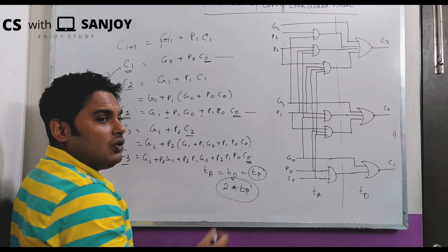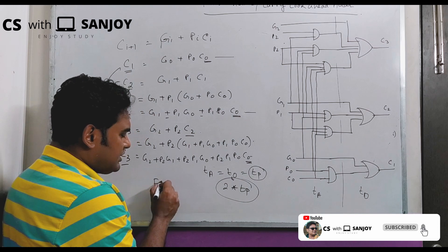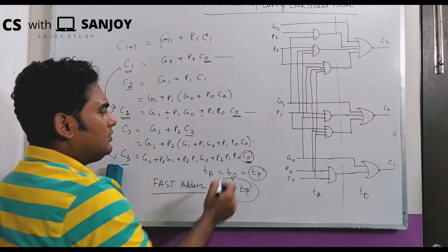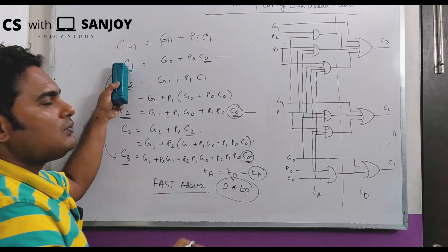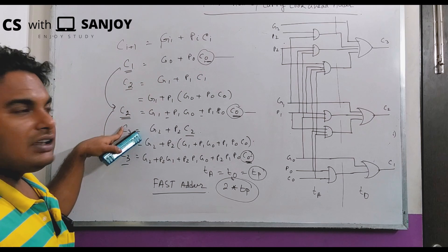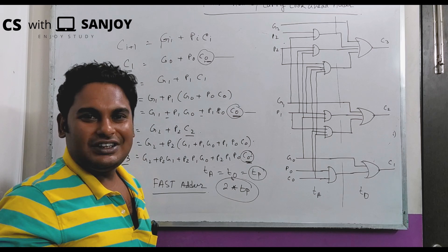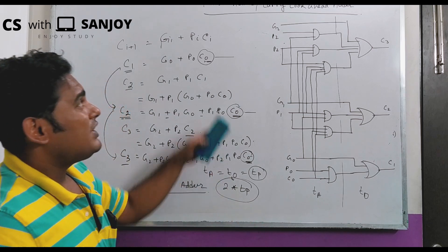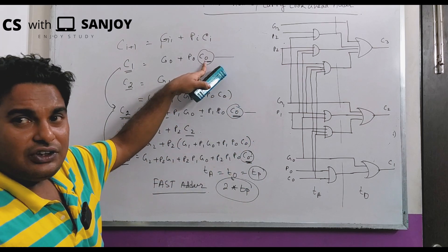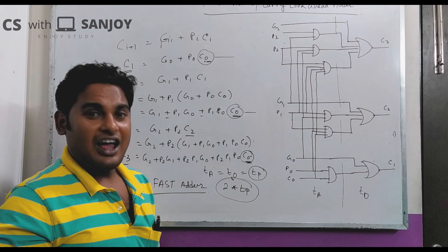That's why it is called a fast adder — it always works in 2 × T_P time regardless of the number of bits. And since we get C2 and C3 by looking ahead from C0, that's why it is also called the carry look-ahead adder. We can look ahead from C0 to get C1, C2, C3, C4, and Cn simultaneously.